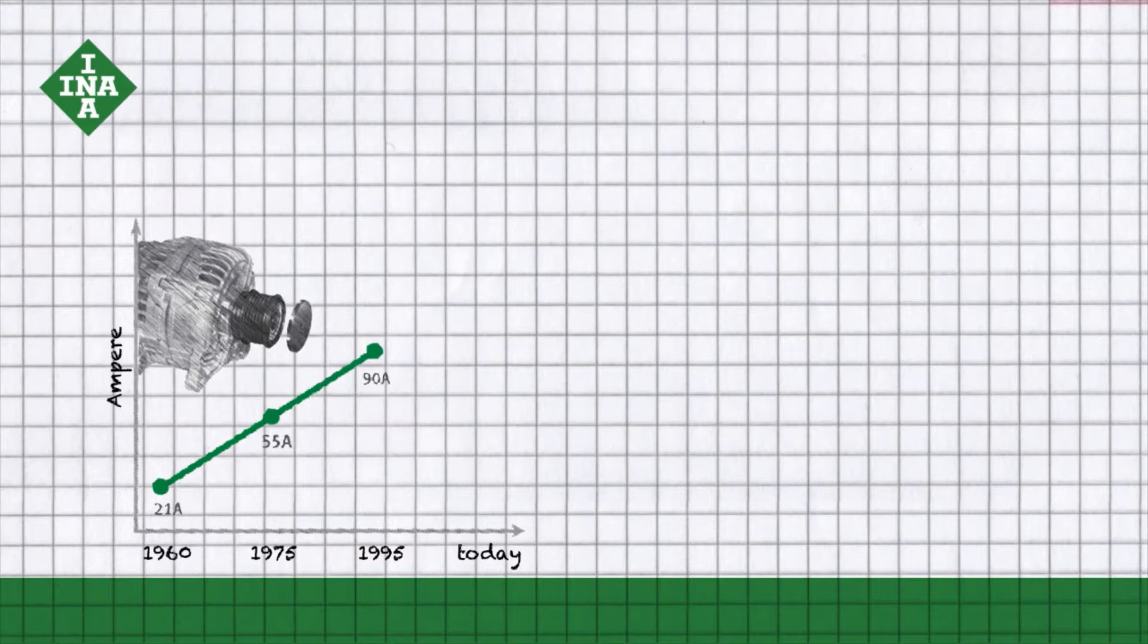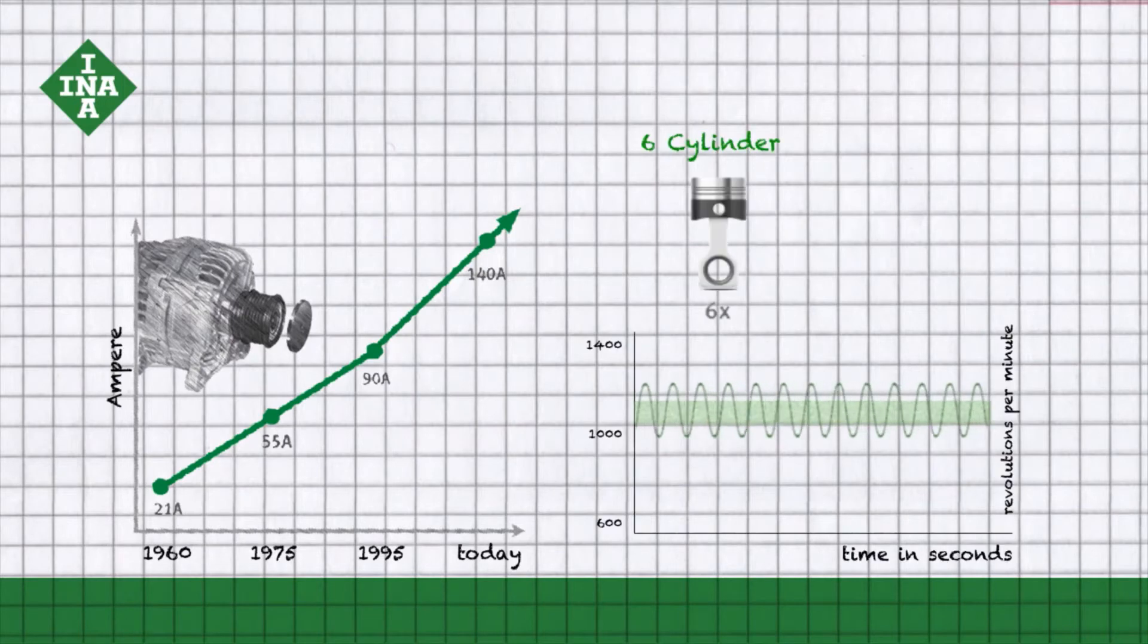Firstly, from the ever larger alternators needed to cover increasing vehicle power requirements. And secondly, because of engine downsizing, which increases load upon the entire system.